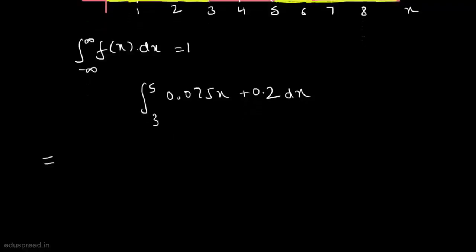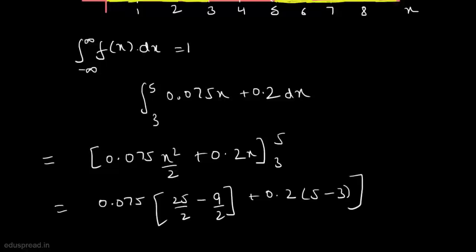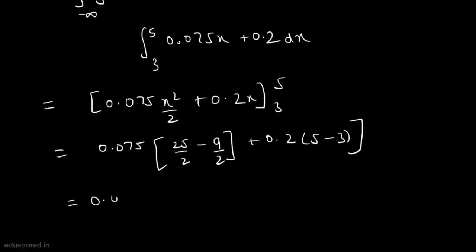This is equal to 0.075 x squared over 2 plus 0.2x, evaluated from 3 to 5. This equals 0.075 times (25/2 minus 9/2) plus 0.2 times (5 minus 3), which equals 0.075 multiplied by 8 plus 0.4, and this equals 1. So the total area under the density curve is indeed 1.